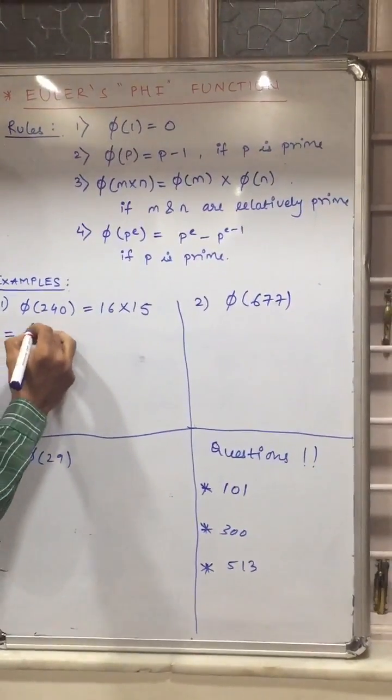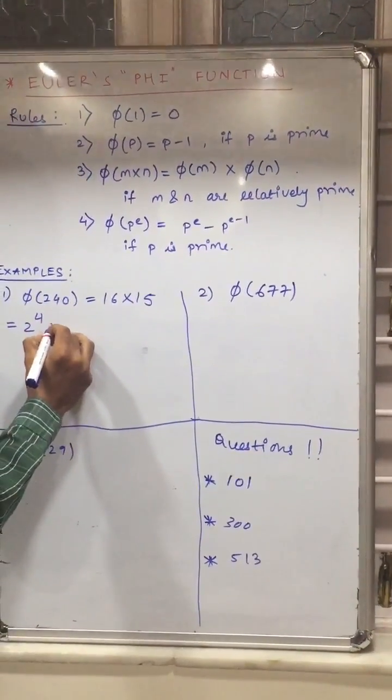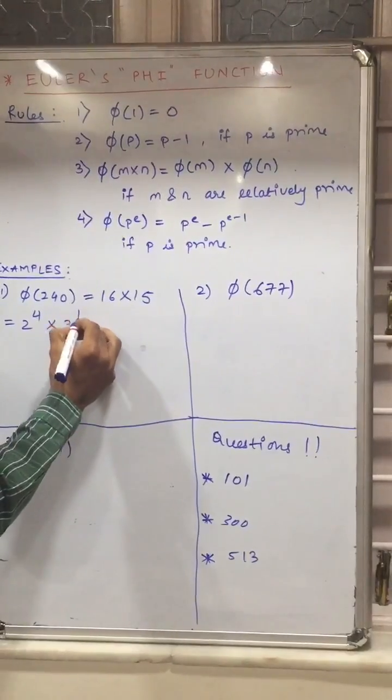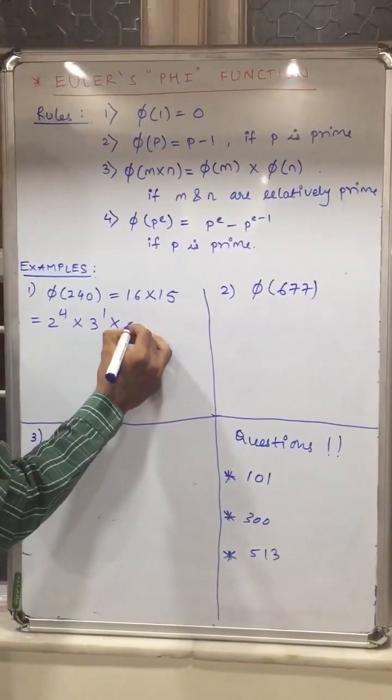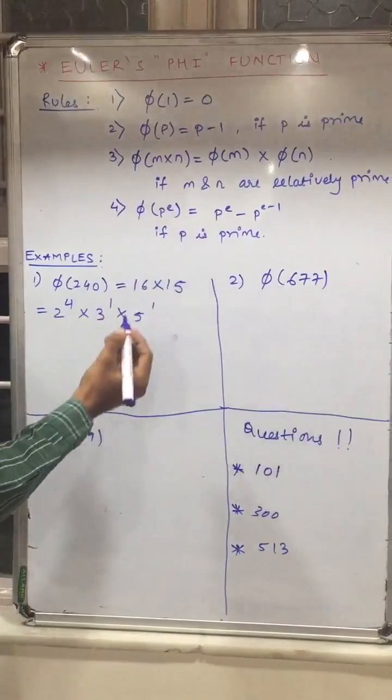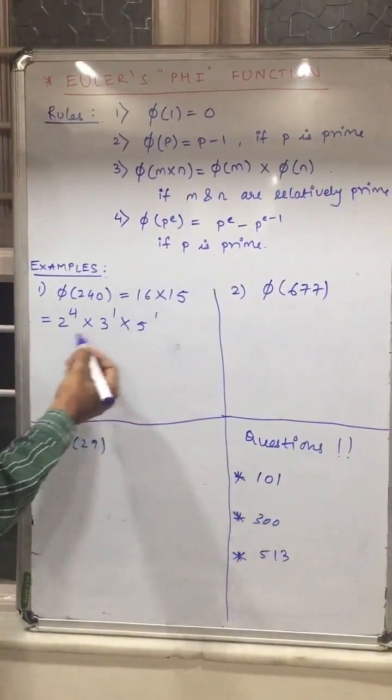So it will be 2 raised to 4 into 3 raised to 1 into 5 raised to 1. Now just match which rule will be applied in this form.